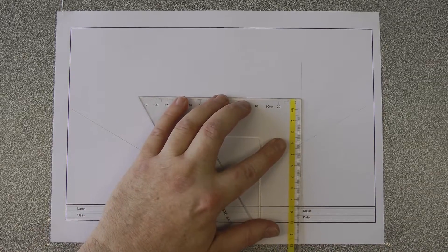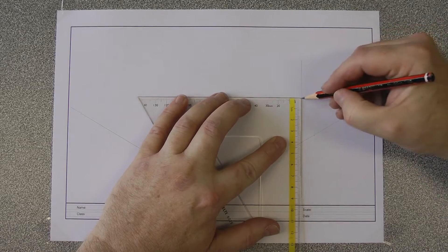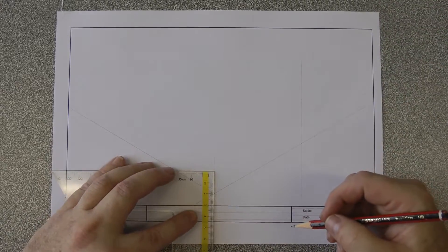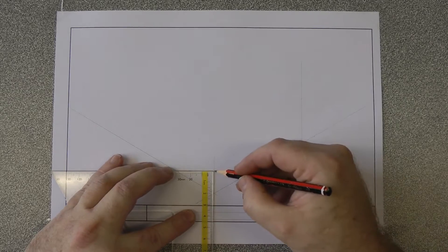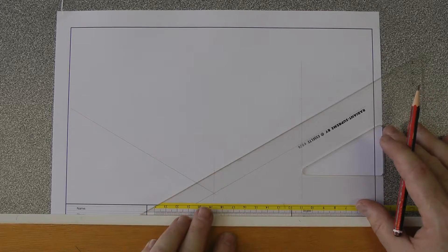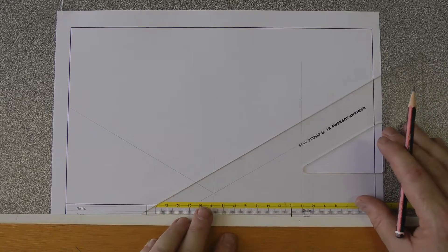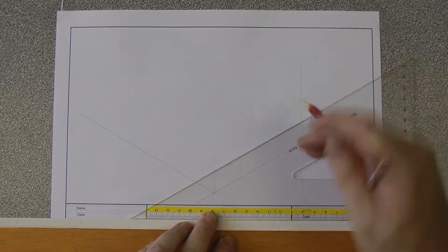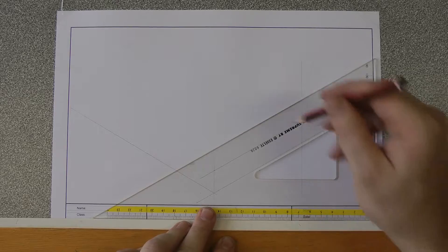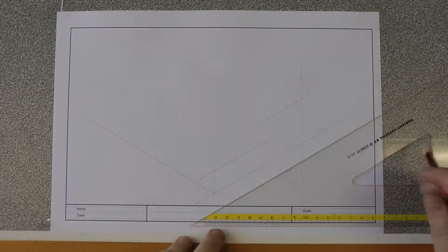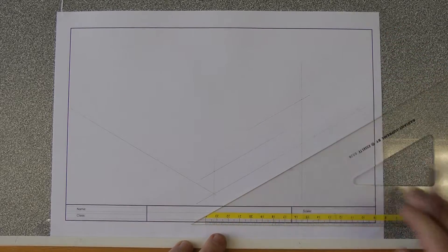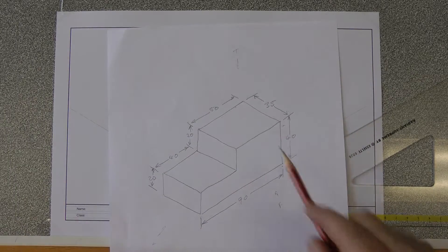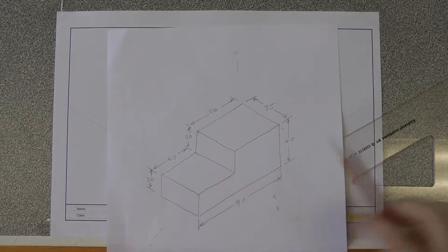So we have the dimension of 90 millimeters there. The height if you remember was 40. Make our mark. And our height at the front if you remember was 20. Make a mark. So with both of those marks I can now take my set square and parallel to the bottom line that goes off at a 30 degree angle to the right, I can draw a construction line. And up at the top here I can draw a construction line. It has to cross through these points - it doesn't have to go any further.